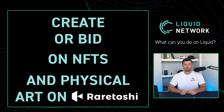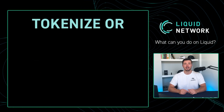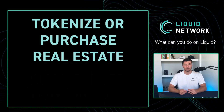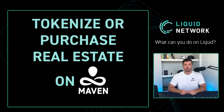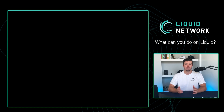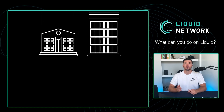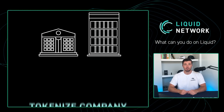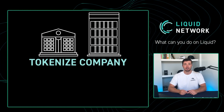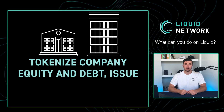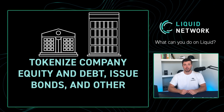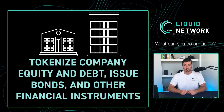Create or bid on NFTs and physical art on Rare Toshi. Tokenize or purchase real estate on Mavin NFT. Or if you're an institution or business, you can tokenize company equity and debt, issue bonds, and other financial instruments.